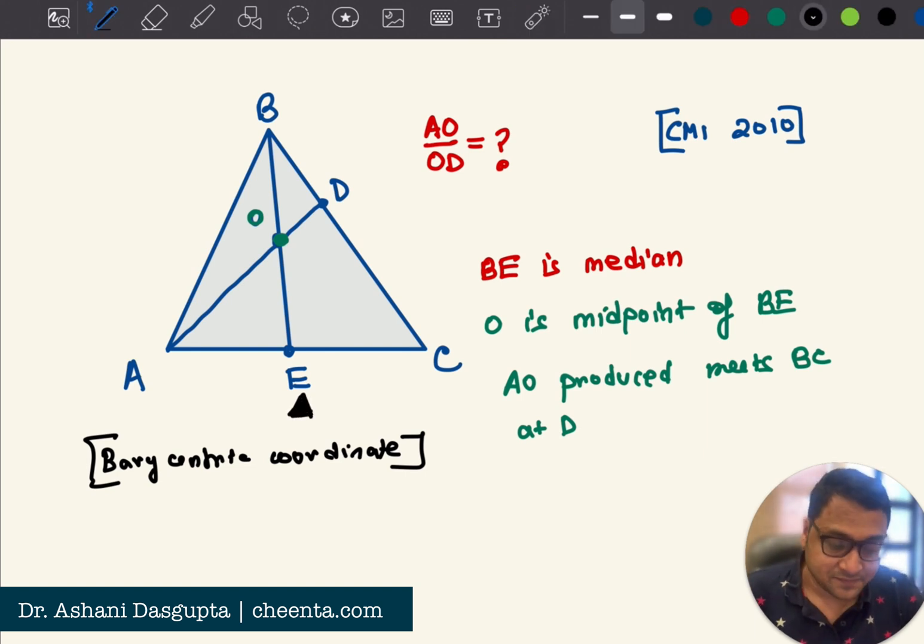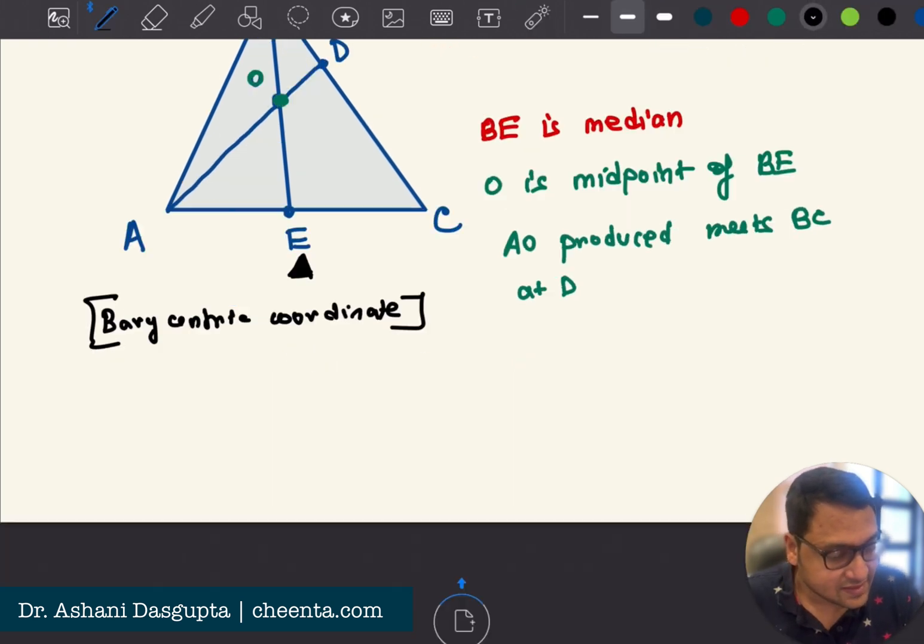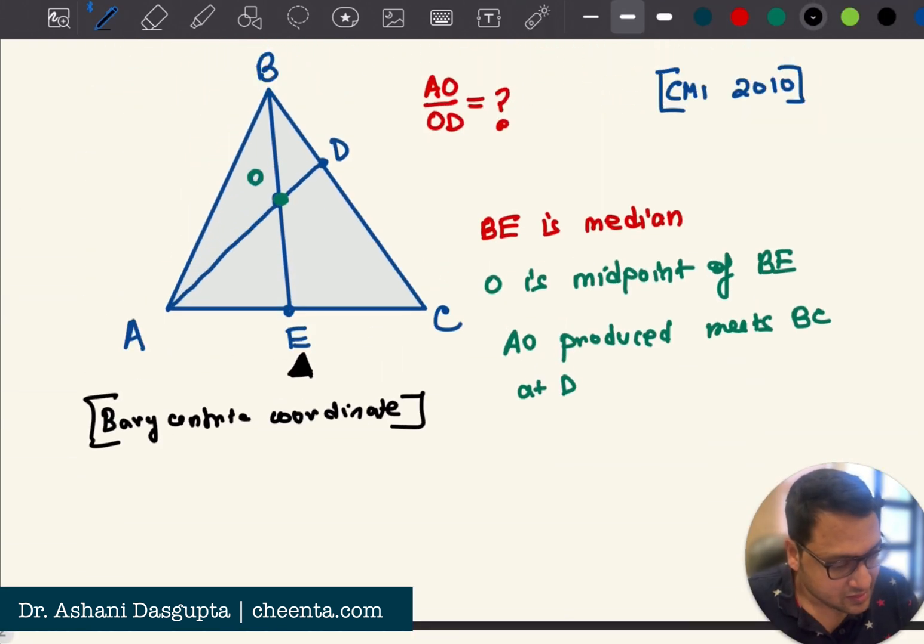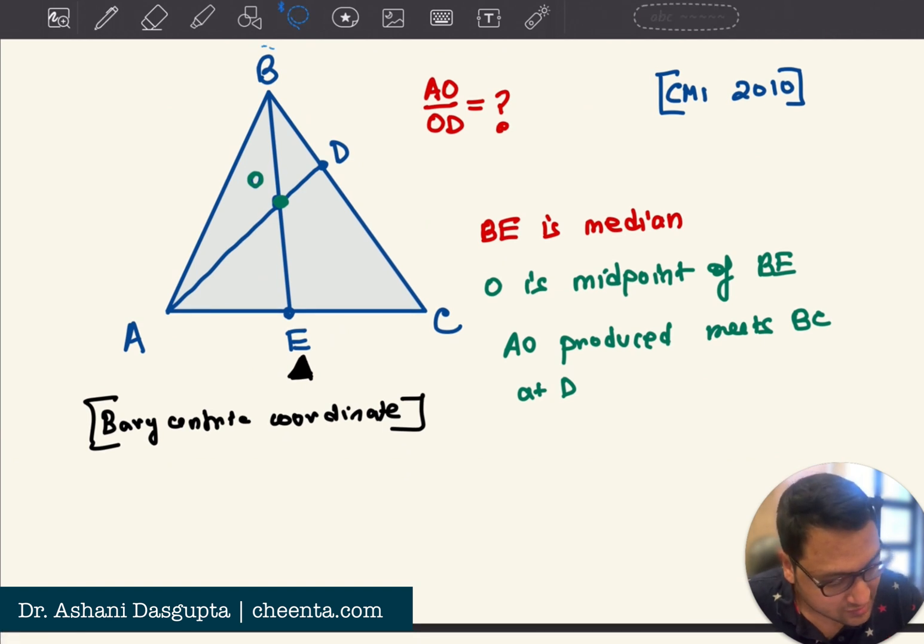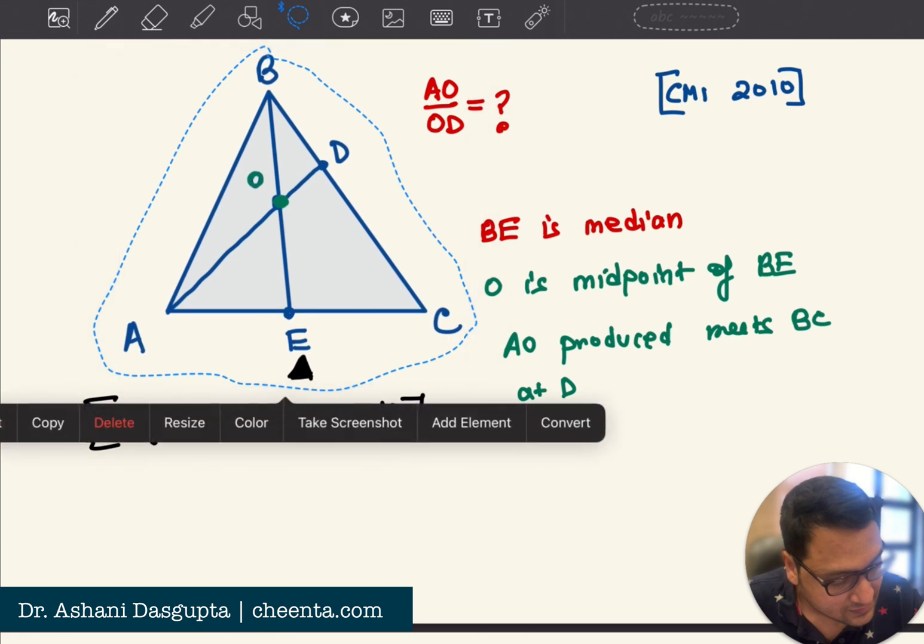The question is, what weights should I put at A and C so that this fulcrum is balanced? So notice that the principle here is quite simple. Let me draw this picture somewhere here. So, the principle is very simple.